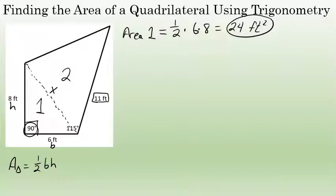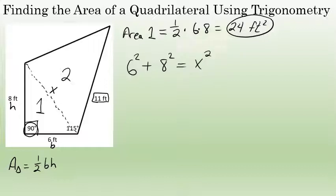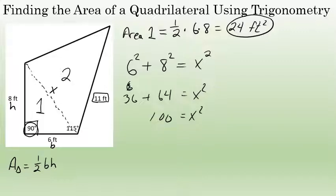My next step is to find the value of x using the Pythagorean theorem, which says that if you square the two legs of a right triangle and add them together — in this case the legs of triangle 1 are 6 and 8 — that equals the square of the hypotenuse x. So 6 squared is 36, 8 squared is 64, meaning x squared equals 100, and taking the square root of both sides gives x equals 10.